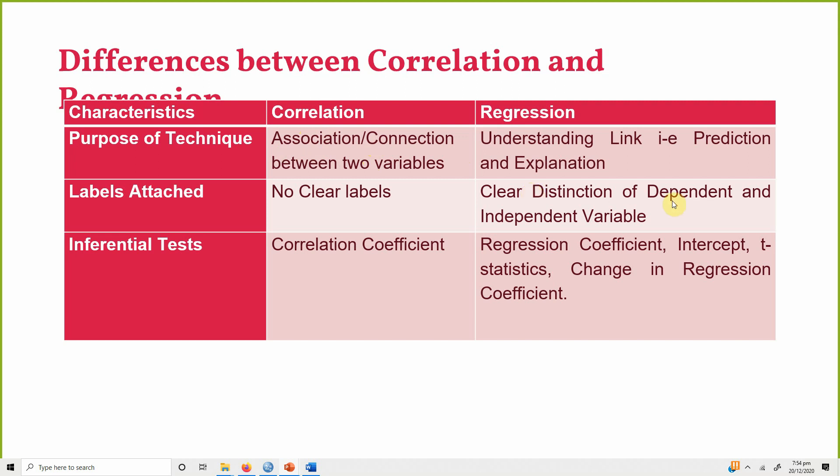dependent variable is and what are your independent variables. The inferential tests in correlation is your correlation coefficient, which tells you about the strength of relationship between the variables. Whereas in regression, you've got your regression coefficient, you have got